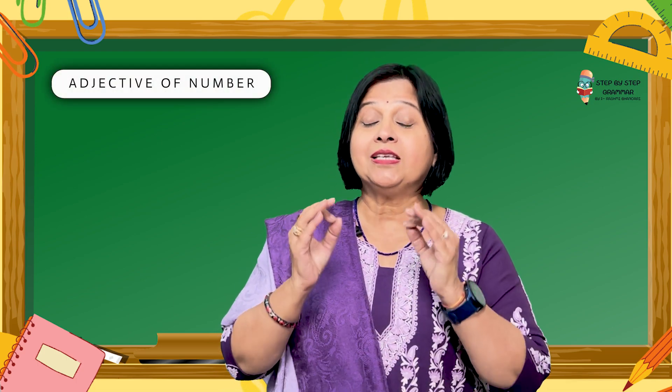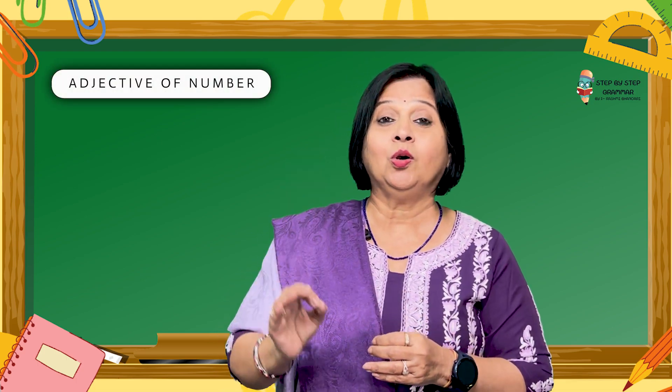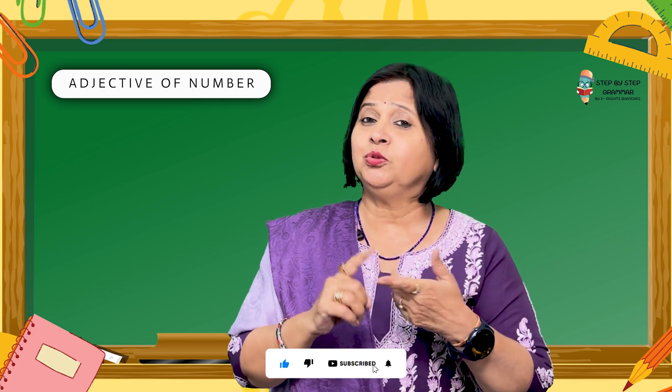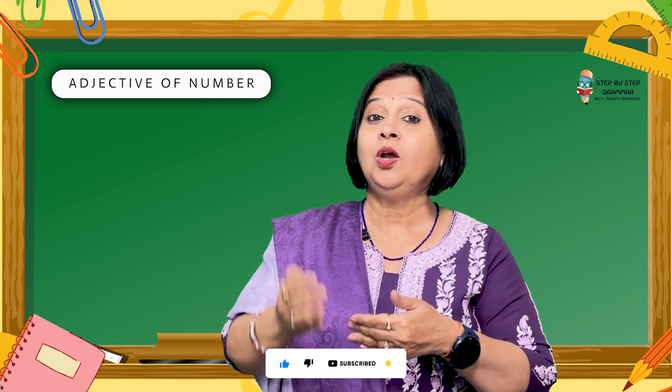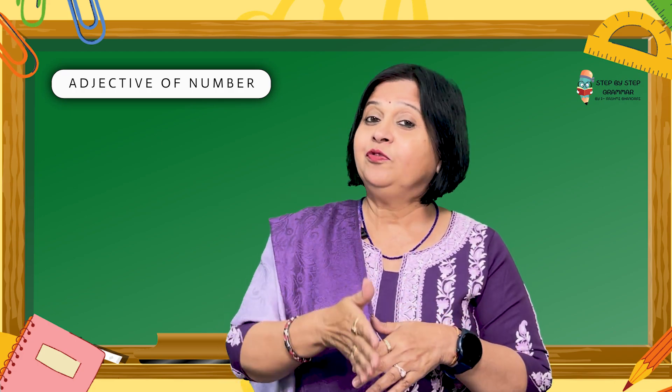The third adjective is adjective of number. They give us a number or the order of the noun or the pronoun. For example: one, two, three and all these numbers. Or when we talk about the order: first, second, third, fourth, and so on.